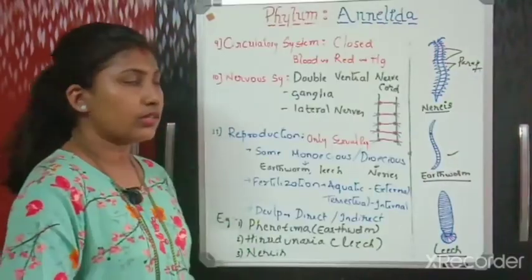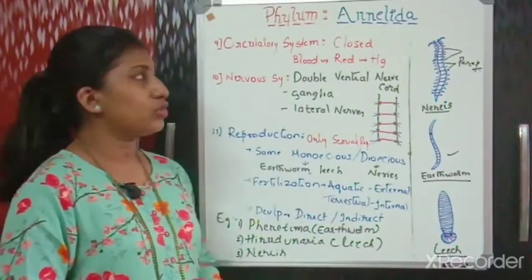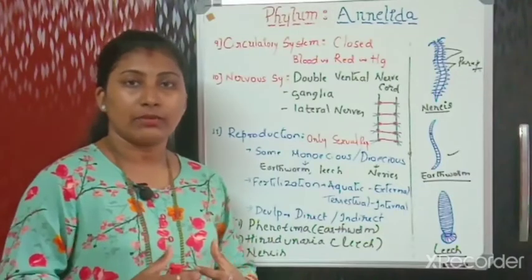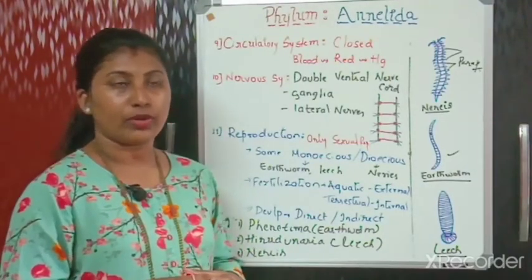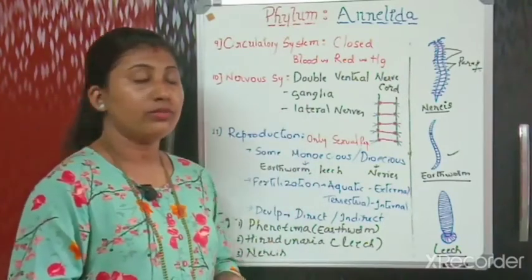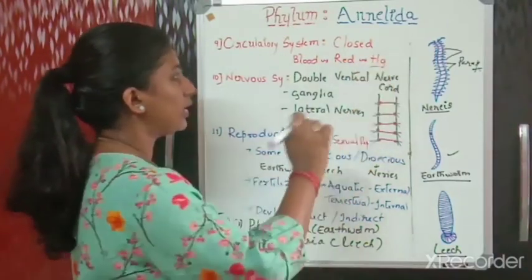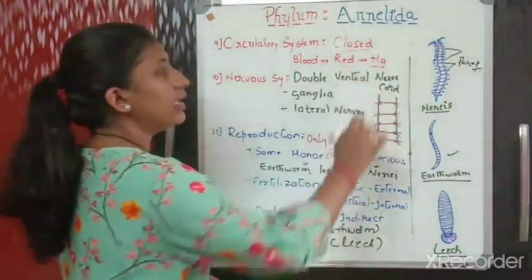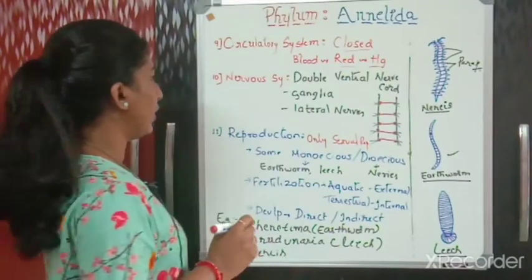Next is about the circulatory system. Here the circulatory system is of the closed type, with blood capillaries inside which the blood circulates. Blood will be red in color because of the presence of hemoglobin. So closed circulatory system and red blood due to hemoglobin.